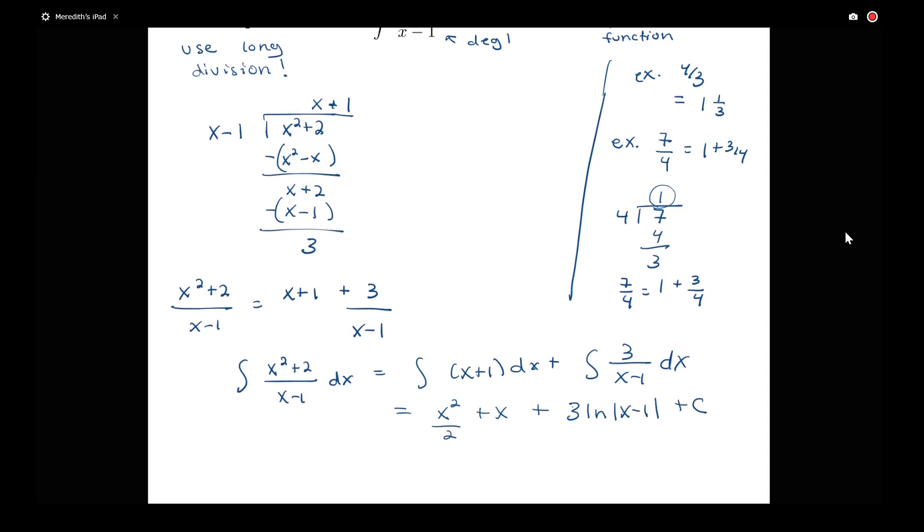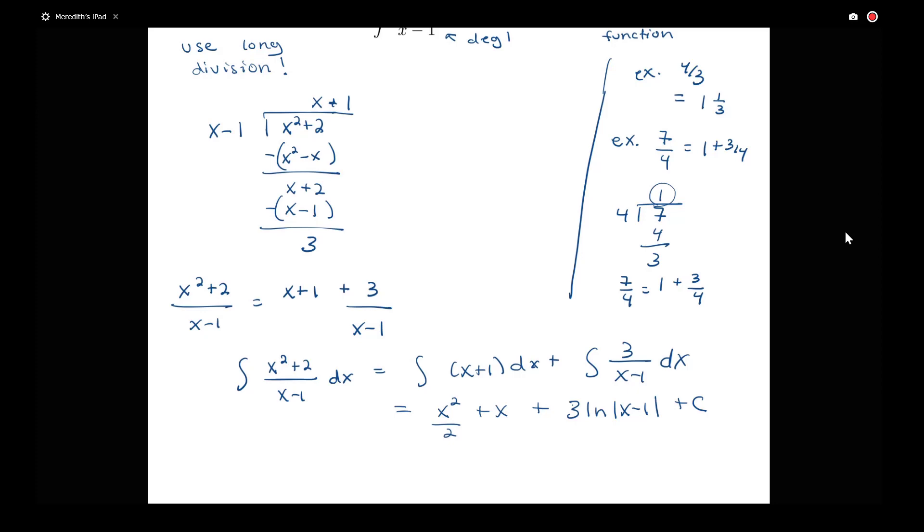I do need that absolute value there because the quantity x minus 1 could potentially be negative. So we need to have our absolute value bars. So this is exactly equal to our integral of x squared plus 2 over x minus 1.